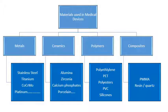Just to sum up: the materials used in medical devices are metals, ceramics, polymers, and composites. In the metal family, what we typically come across in medical devices are stainless steel, titanium, cobalt-chromium, molybdenum, and platinum.